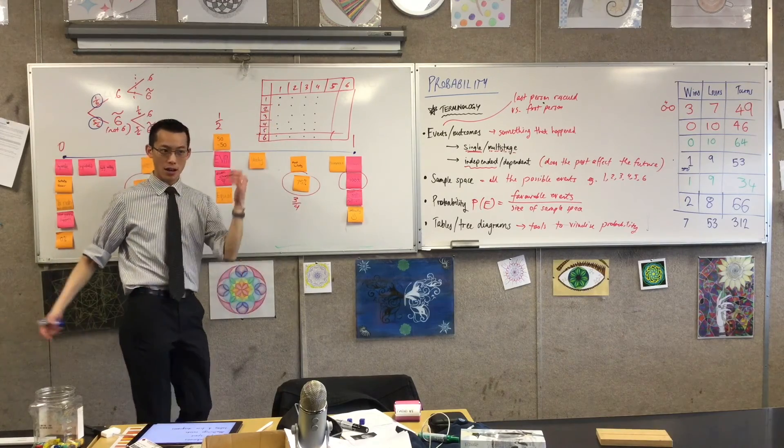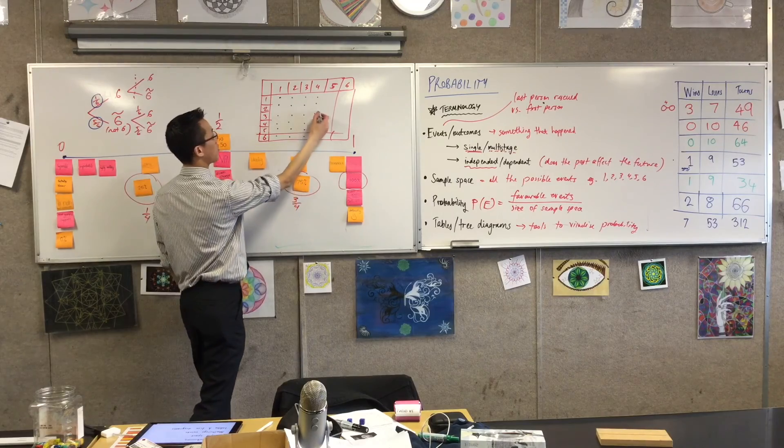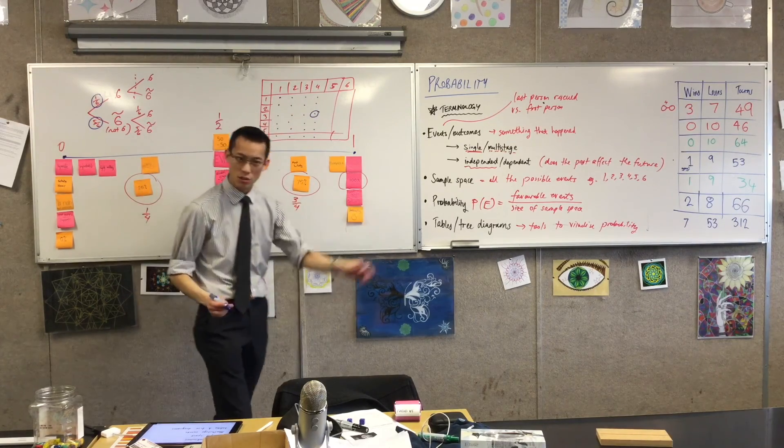Each one of these dots represents an event. For example, this one would be rolling a one and a one - that's a pair of ones. Or this one here would be rolling a four and then a three. So these are just tools you can use.